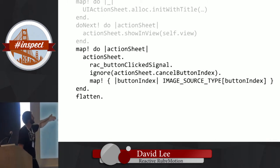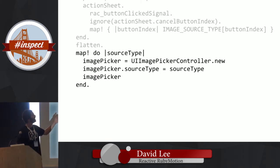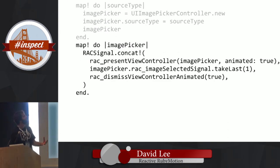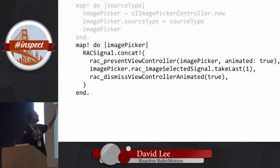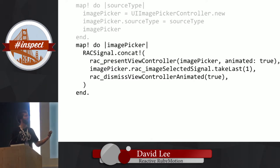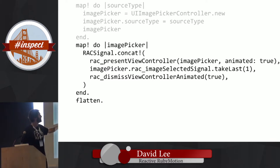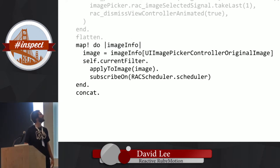Instead of a signal of action sheets we now have a signal of signals. We don't want that, so we throw in a flatten — we'll get into flatten a bit more. We map the source type into an image picker — pretty straightforward. Now we have an image picker, we want to show it, get the selected image, then dismiss it. 'Concat' sequences things in order: we present it, and once presented we start waiting for a selected image. I've got 'take last' on the end, which allows the image picker to stay open if you're selecting from the camera roll and accidentally press the wrong one.